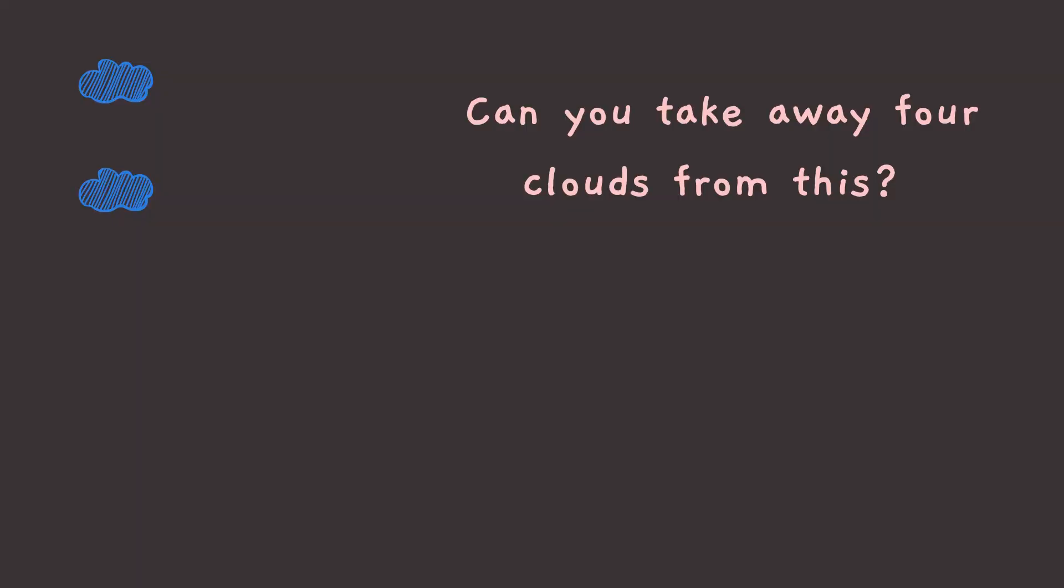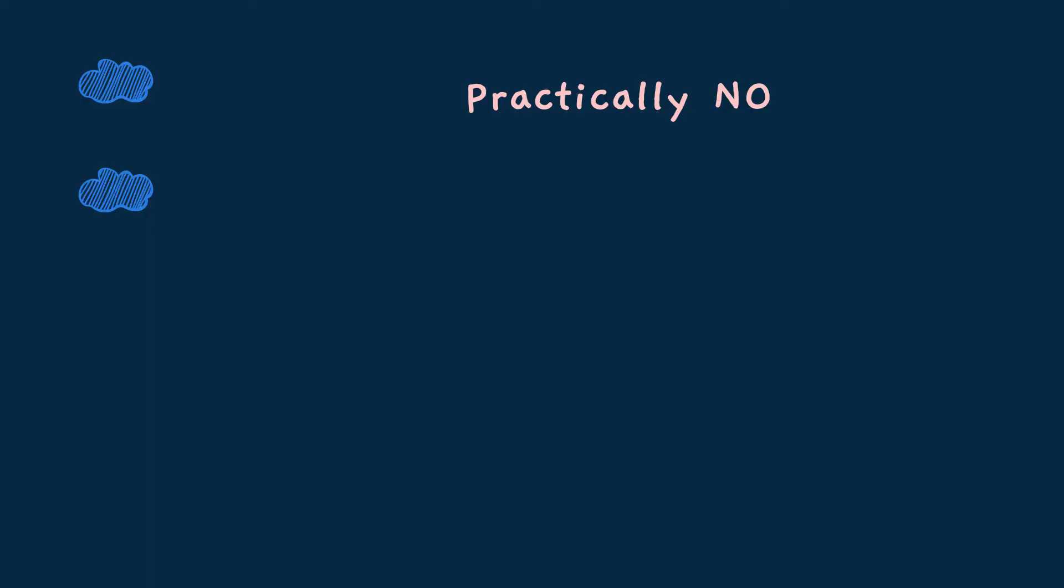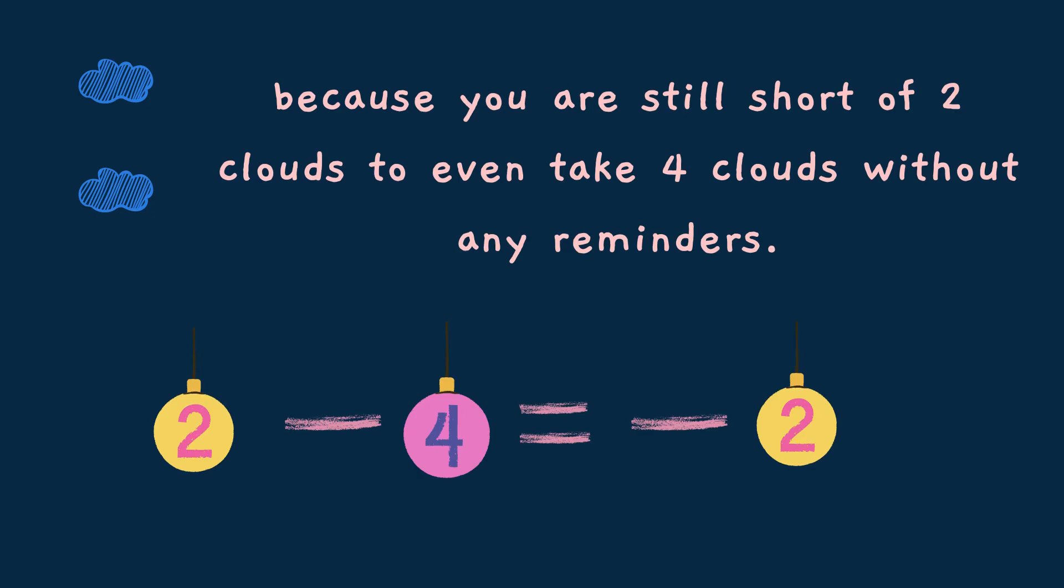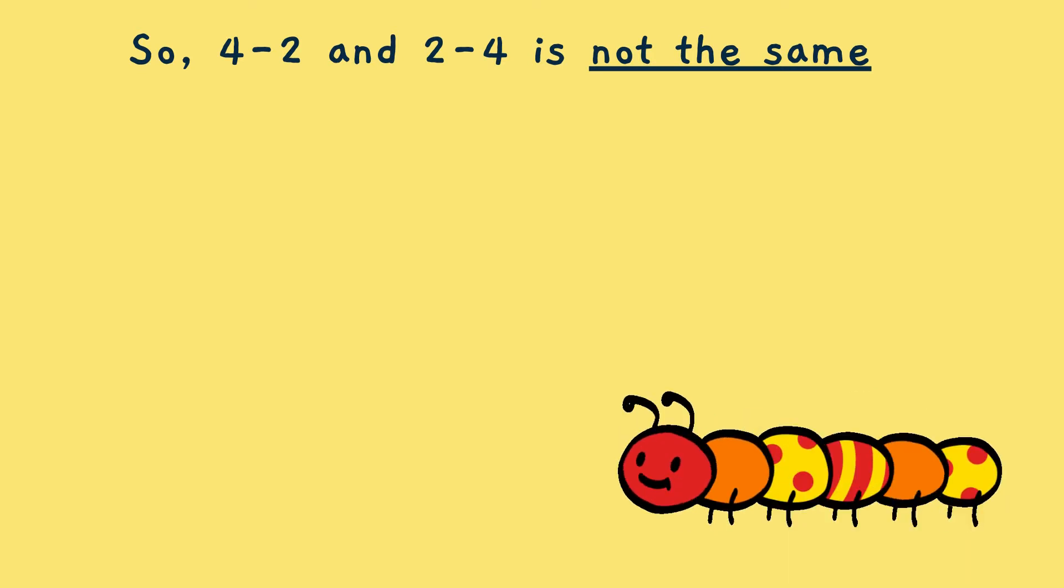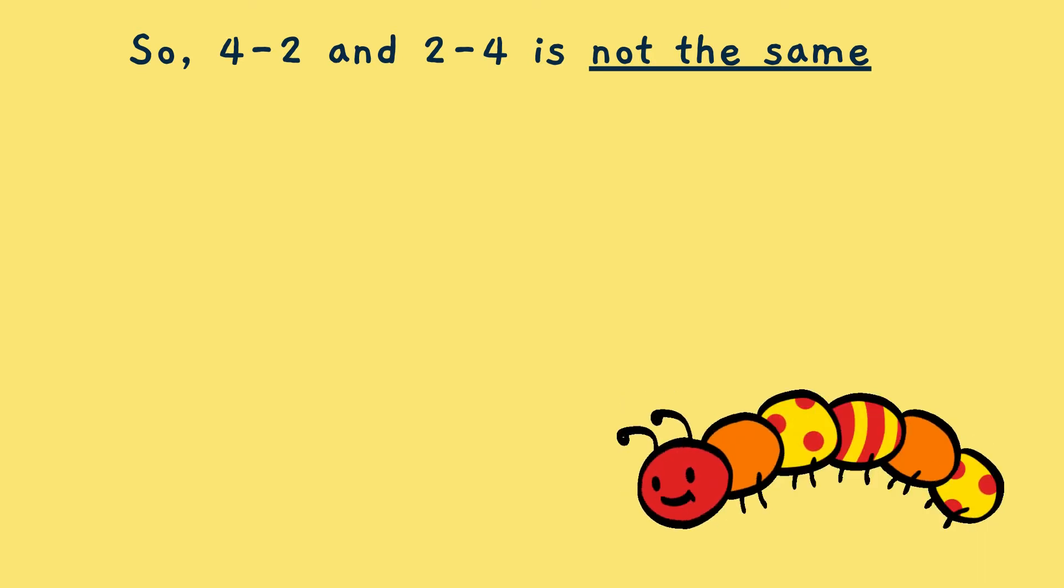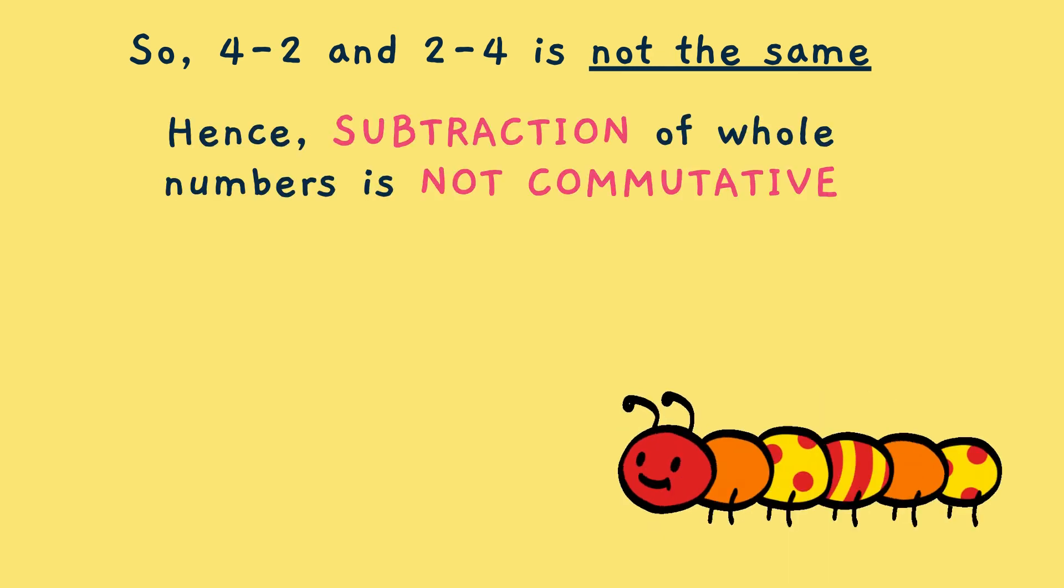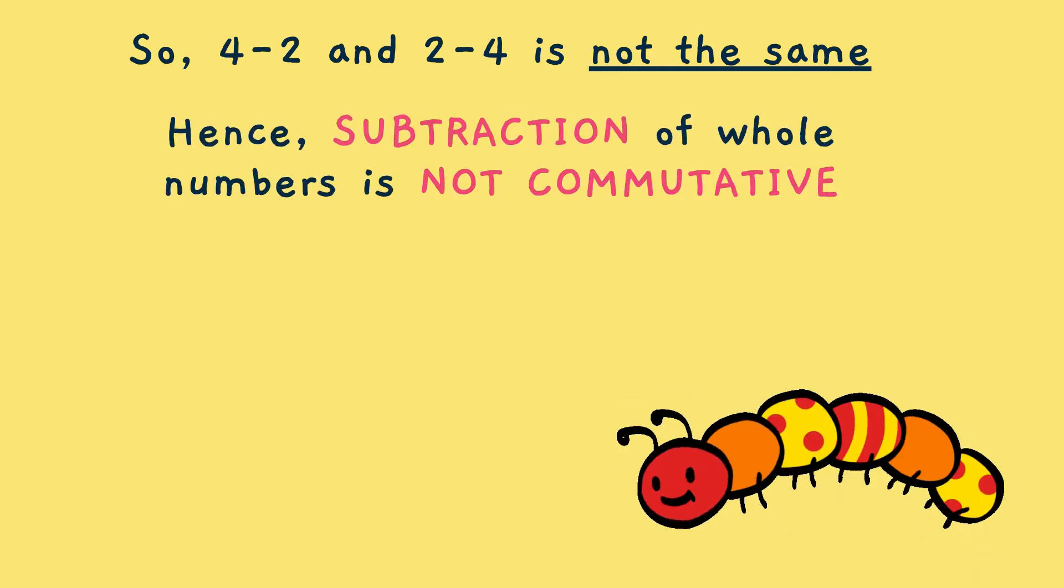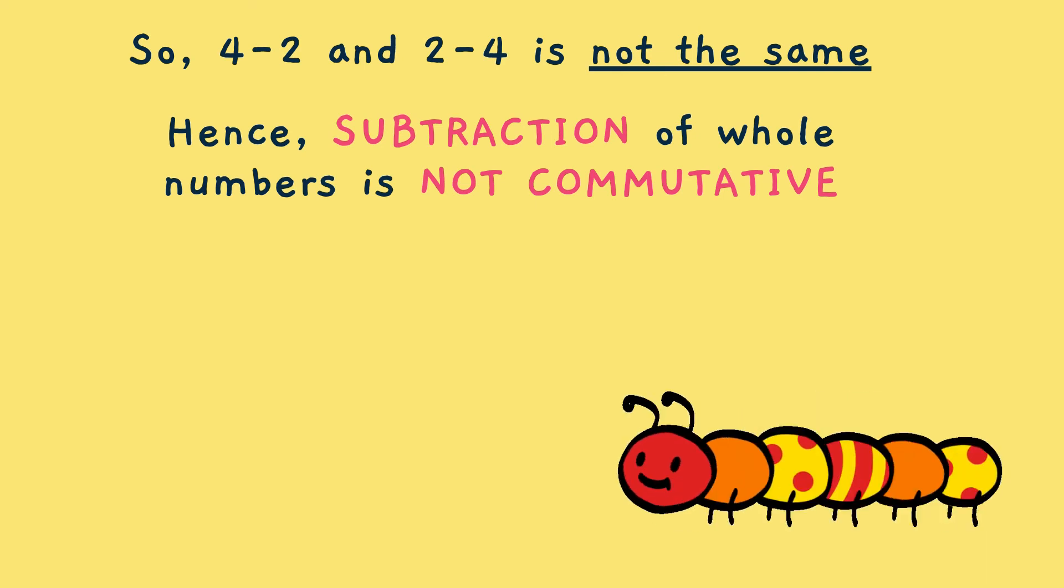Now we have 2 clouds. Can you take away 4 clouds from this? Practically no. Because you are still short of 2 clouds to even take 4 clouds without any reminder. And that is represented as 2 minus 4 which is equal to minus 2. So 4 minus 2 and 2 minus 4 is not the same. Hence subtraction of whole numbers is not commutative.